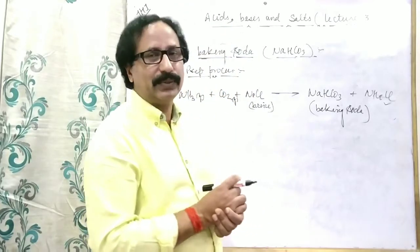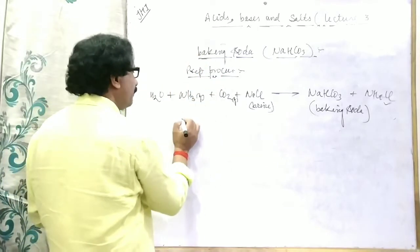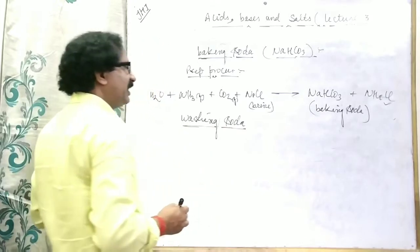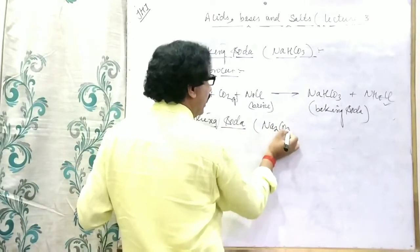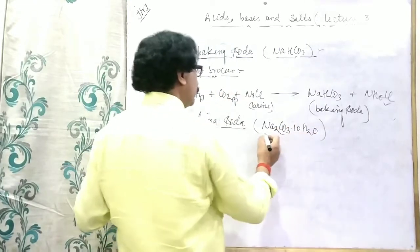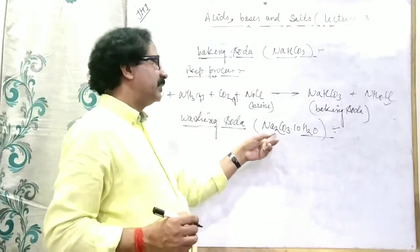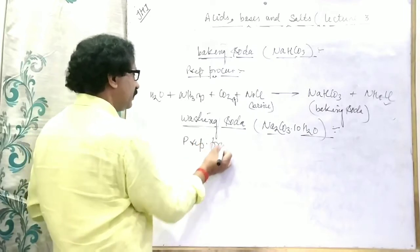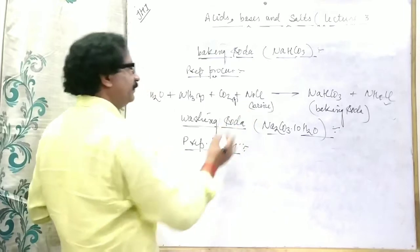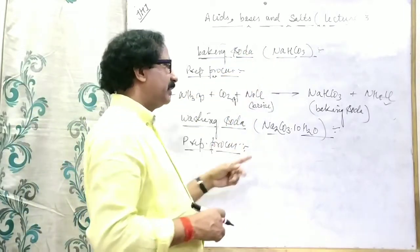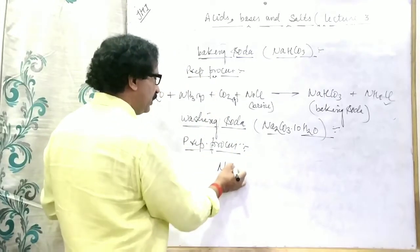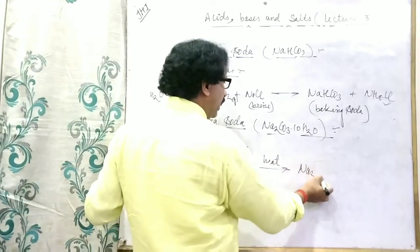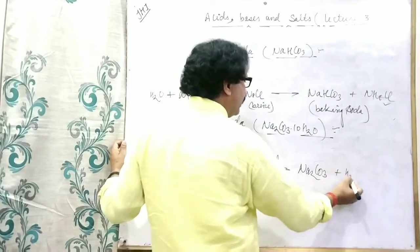Baking soda is also used for the preparation of washing soda. Next compound is washing soda. Its chemical formula is Na₂CO₃·10H₂O — this is washing soda, means hydrated sodium carbonate; it contains 10 moles of crystalline water. It is prepared from baking soda: on heating baking soda, the formation of washing soda takes place. The formula of baking soda NaHCO₃ is allowed to heat strongly, then Na₂CO₃ plus H₂O plus CO₂ is formed.